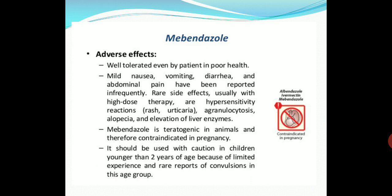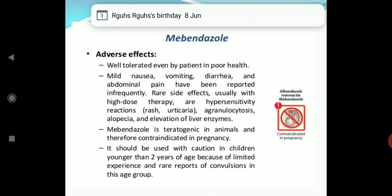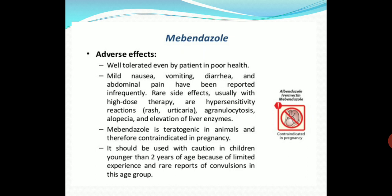Coming to the adverse effects of mebendazole, albendazole, and ivermectin: generally they are well tolerated by patients. In many conditions they may produce mild nausea, vomiting, diarrhea, and abdominal pain. Certain rare side effects generally seen with high-dose therapy are hypersensitivity reactions like rashes and urticaria, agranulocytosis, alopecia, and elevation of liver enzyme levels, observed with higher doses of mebendazole.